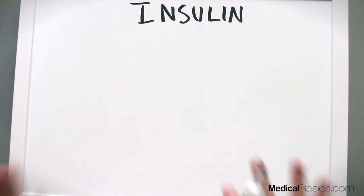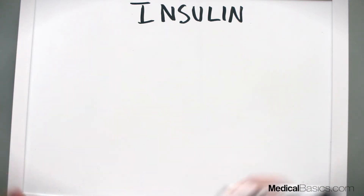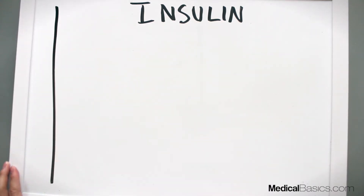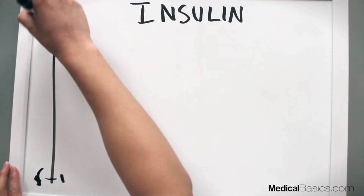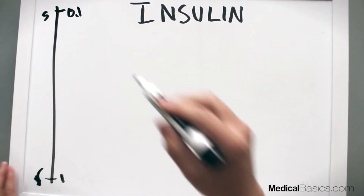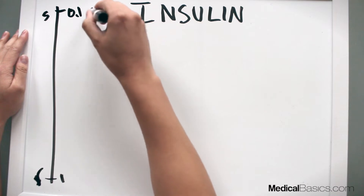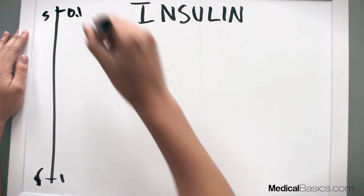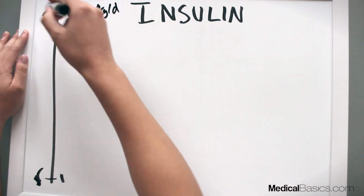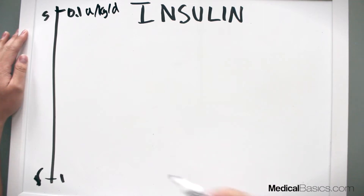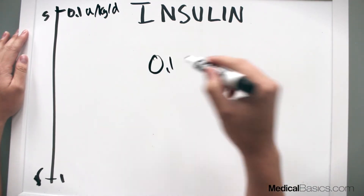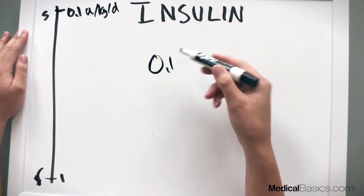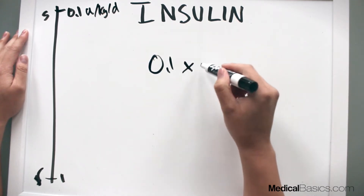Now that we understand long-acting, short-acting, prandial, and correctional insulin, we need to figure out how much insulin to give. We think about this using a sensitivity scale — at the bottom we have resistant patients, at the top sensitive patients — and this works in units of insulin per kilogram per day. This conversion factor is based on how sensitive or resistant the patient may be. For a very sensitive, insulin-naive patient we might use 0.1 times their weight in kilograms.